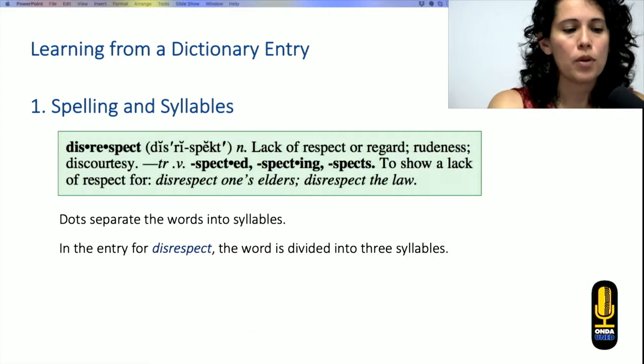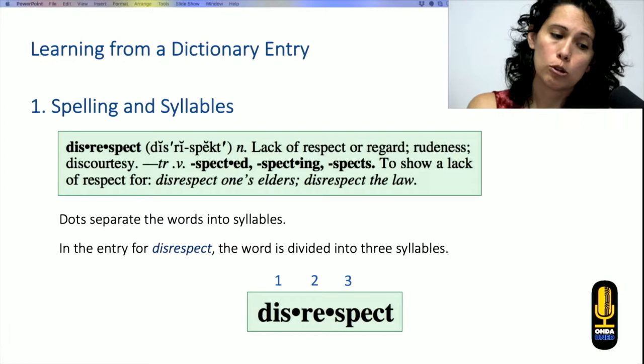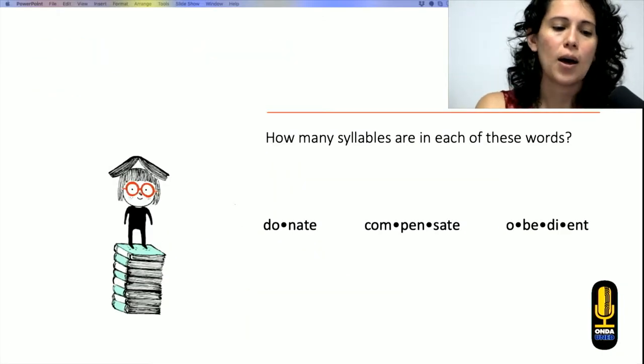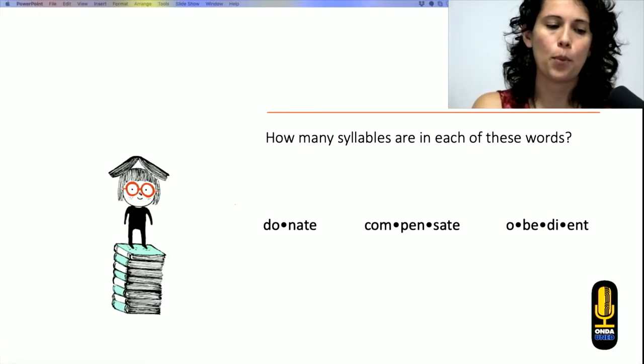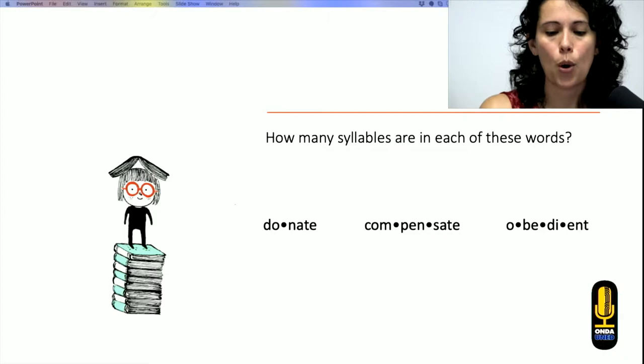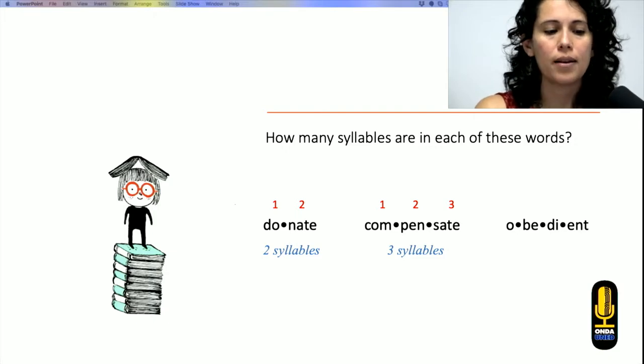For example, in the entry for disrespect, the word is divided into three syllables. Disrespect. And in order to check if we're understanding, let's see these examples. How many syllables are in each of these words? We have the word donate, compensate, and obedient. Well, number one has two syllables, number two has three syllables, and number three has four syllables.